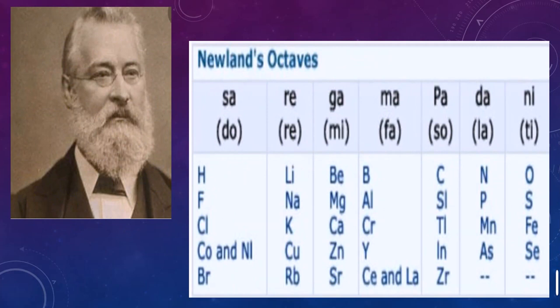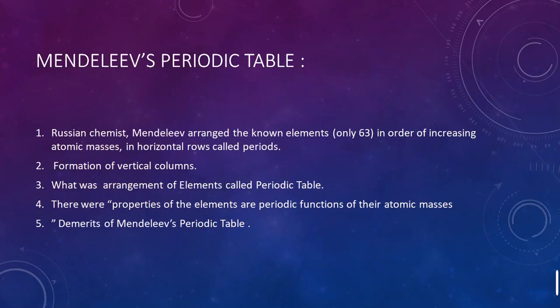Newland related his theory to a musical system, comparing element properties to musical notes: sa, re, ga, ma, pa, dha, ni, sa. For instance, lithium and sodium share similar chemical properties like the first and eighth musical notes. However, this classification had demerits: cobalt and nickel were placed in the same position, halogens like fluorine, chlorine, and bromine were placed with metals, and only 56 elements were arranged. That is why Newland's arrangement failed.